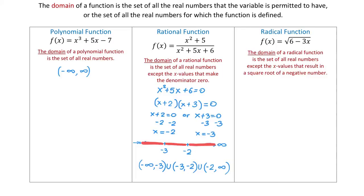For example, the square root of 16 equals 4, and the square root of 0 equals 0. But the square root of negative 16 is not a real number, because there is nothing we can raise to the power of 2 that would give us negative 16. So to find the domain we take the expression 6 minus 3x and require that it be greater than or equal to 0.